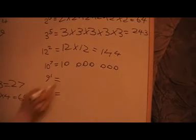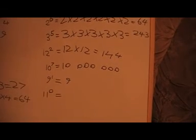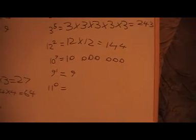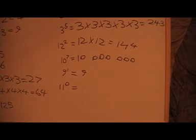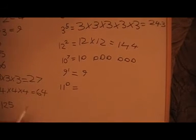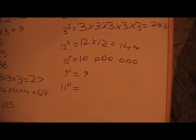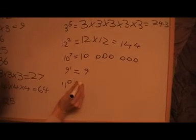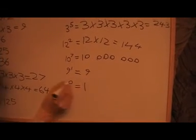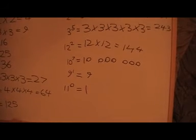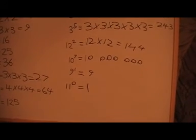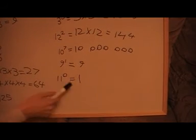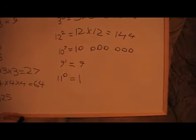9 to the power of 1 is just 9 — we're not multiplying it by itself. So any number to the power of 1 is the number itself. And here I've got 11 to the power of 0. Now, if we've got something to the power of 0, it's always 1. The reason will be much more obvious later on, but for now we're just going to say that anything to the power of 0 is 1.